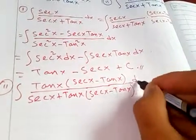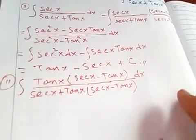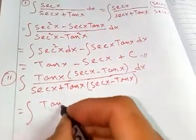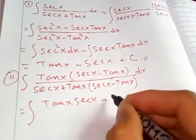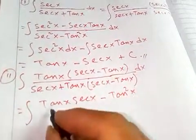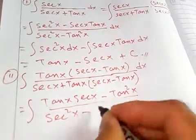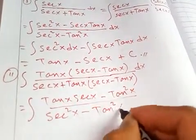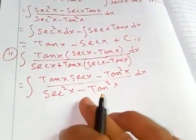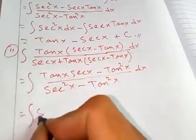After multiplying, the numerator becomes tangent x times secant x minus tangent squared x, and the denominator becomes secant squared x minus tangent squared x, which again equals one.